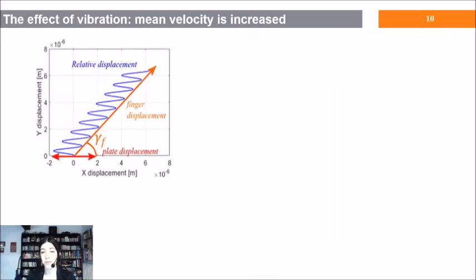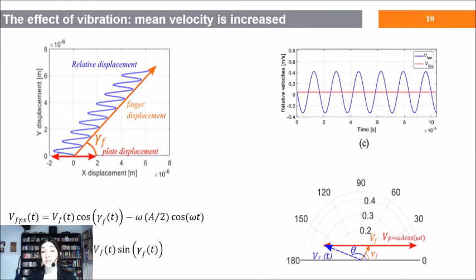So why does vibration reduce friction? Imagine that the orange line is the trajectory of exploration of a finger. If vibrations are on, the trajectory will be modified into the blue one. As a whole, the travel distance has increased but the time remained constant, so the velocity is increased.